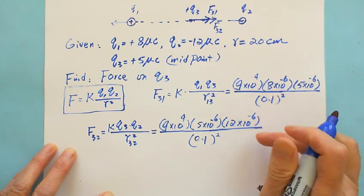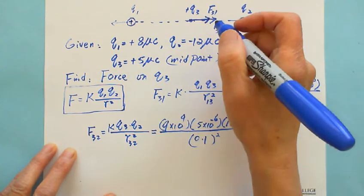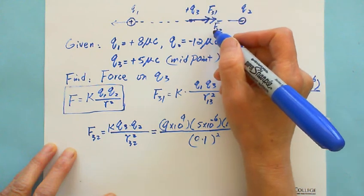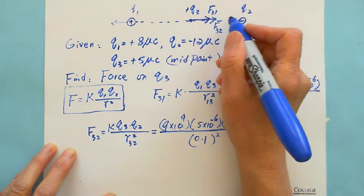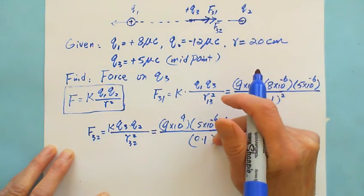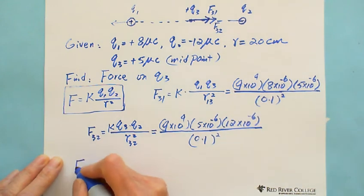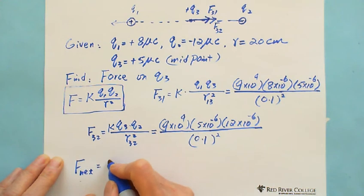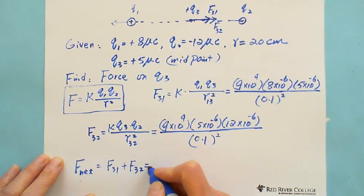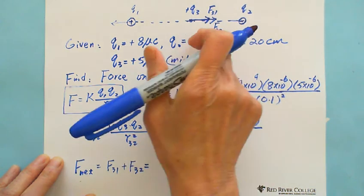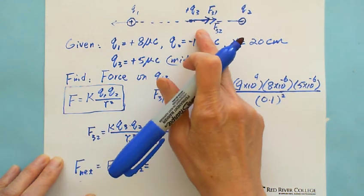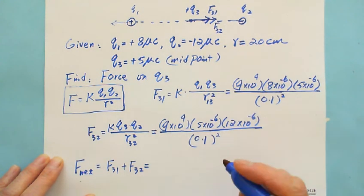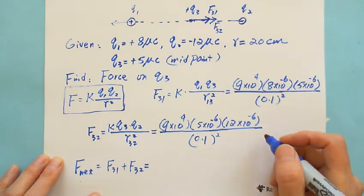This is the magnitude because we already found the direction. F31 and F32 both point to the right. So after calculating these two forces, the net force on Q3 is F31 plus F32 because they have the same direction. Add these two and we get the answer.